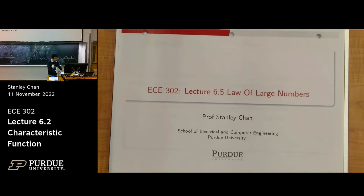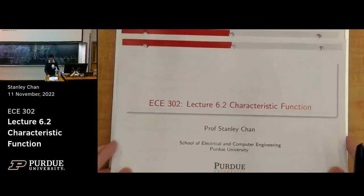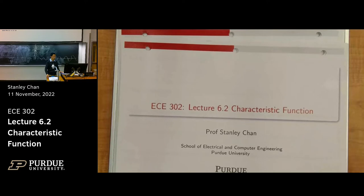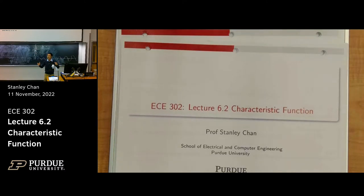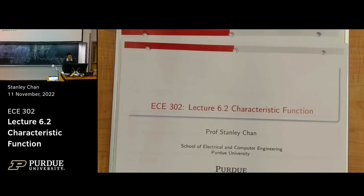Where are we now? We were actually talking about characteristic functions, if you remember. We talked about a related concept called the moment-generating function, which is the Laplace transform of your probability density function. And then the Fourier transform of the density function. Last time we started talking about a few examples of how we use the characteristic function. Let me turn on my computer to go to the website and download the table again.